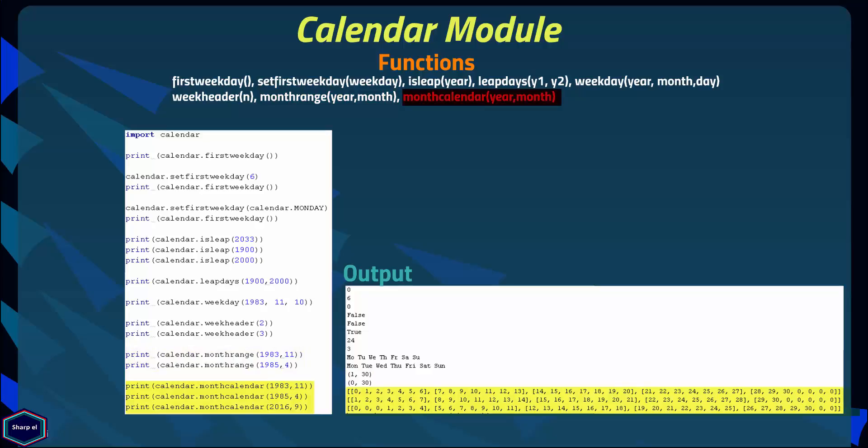The monthcalendar() function takes two arguments — a year and a month — and it returns a matrix in which each row represents a week in that month. By default each week begins with Monday, and the days outside of the month are represented by zeros.